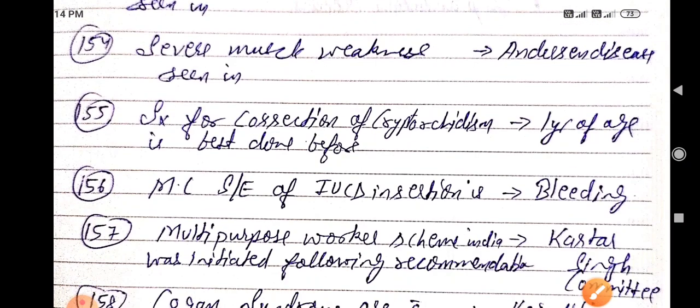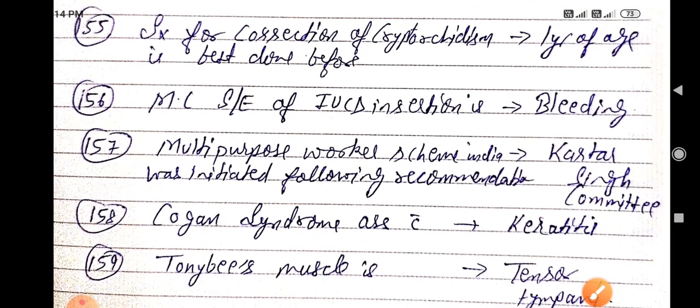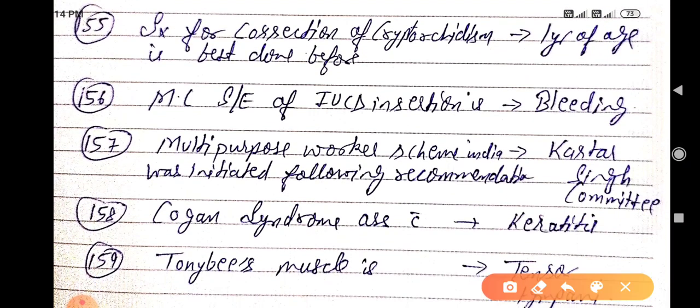Surgery for correction of cryptorchidism is best done before the age of one year. Most common side effect of IUCD insertion is bleeding.